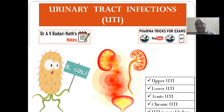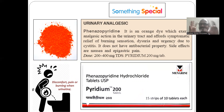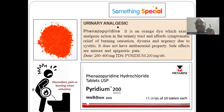First, I will give you a special drug — compulsory for all competitive examinations. Before entering into urinary tract infection treatment, something special: the urinary analgesic. Generally for headache or stomach pain we take common painkillers, but for urinary analgesic it is a separate term — phenazopyridine. Phenazopyridine is a special urinary analgesic.